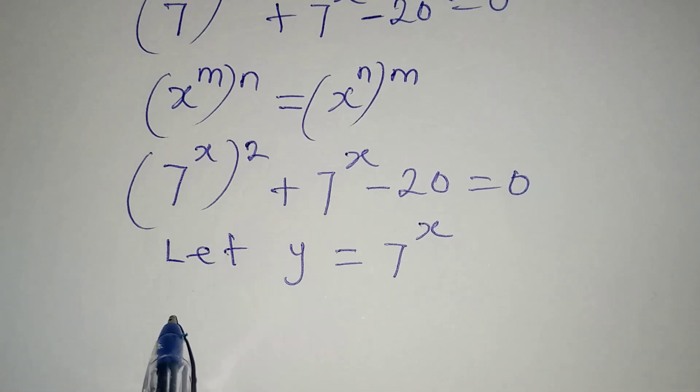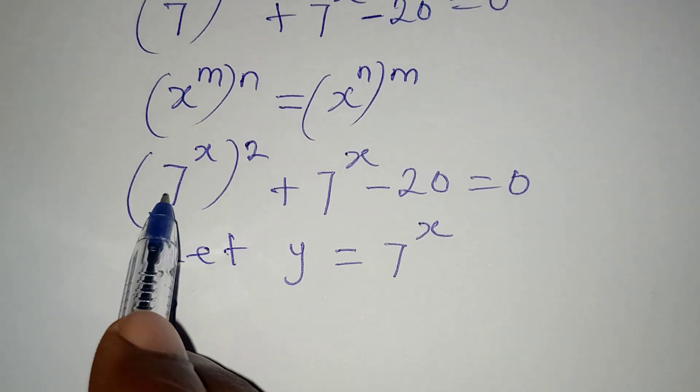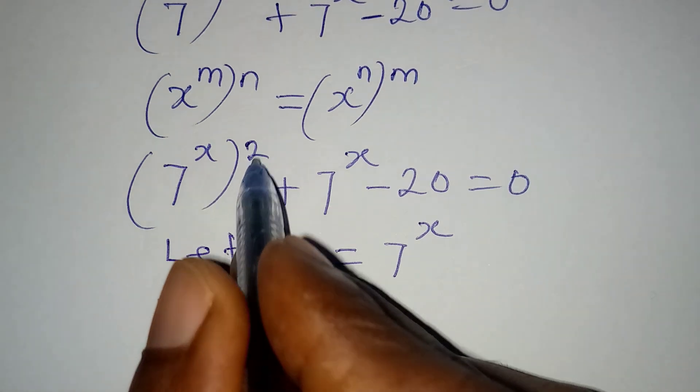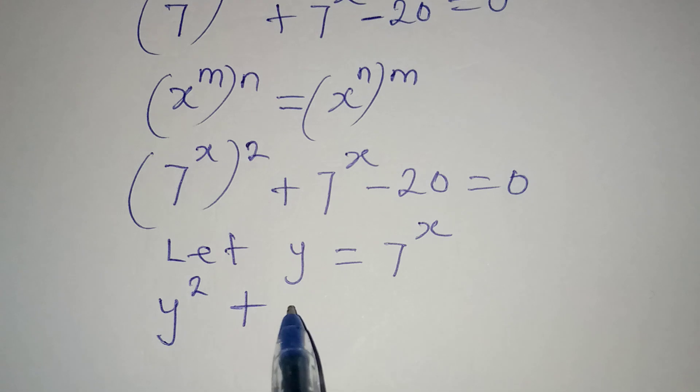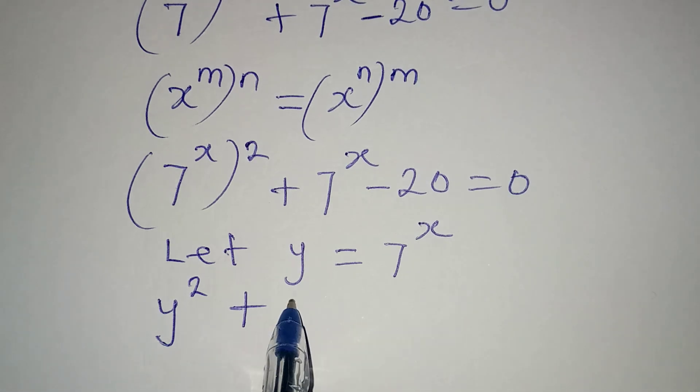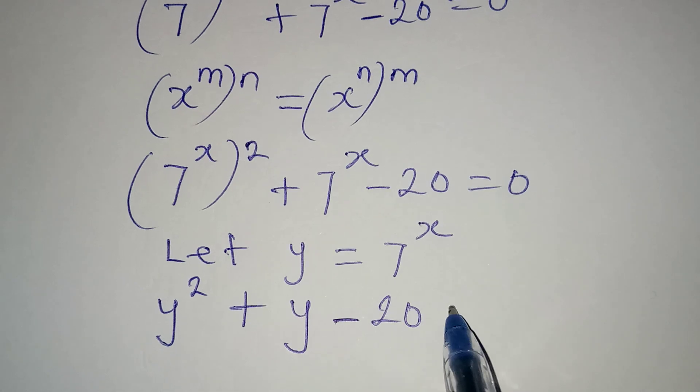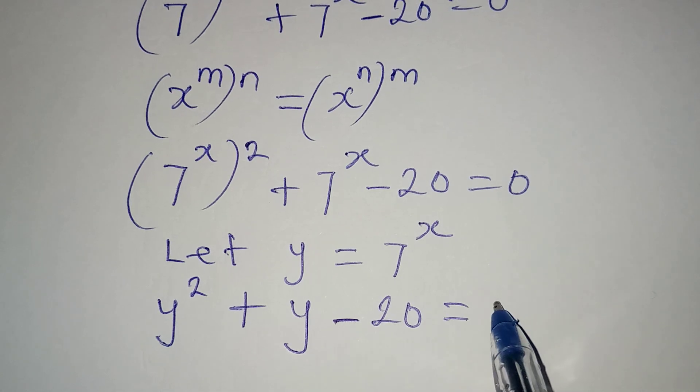And then I have y for 7 to the power of x, then this square will appear, then plus we're going to have y then minus 20 which will give us 0.